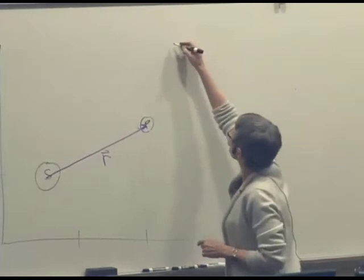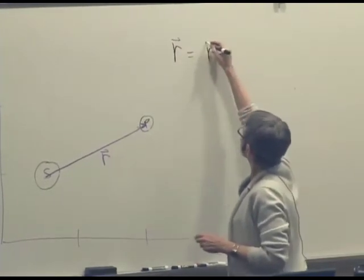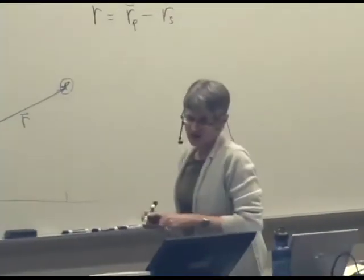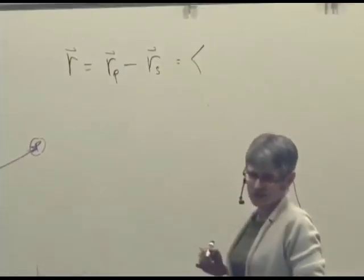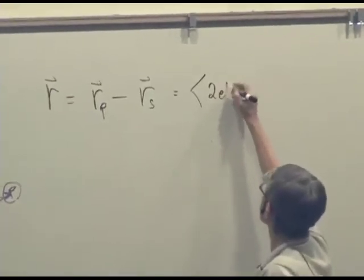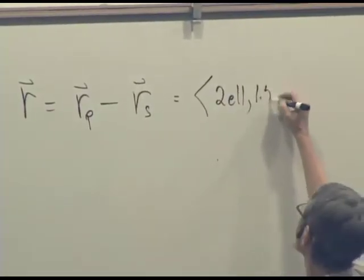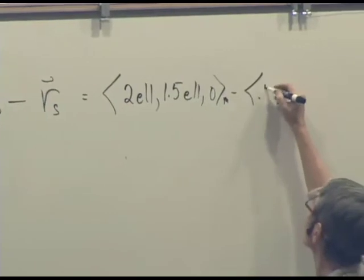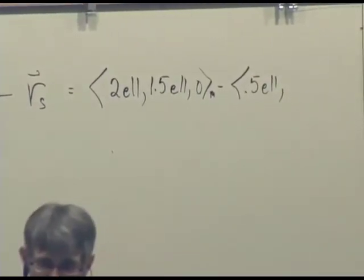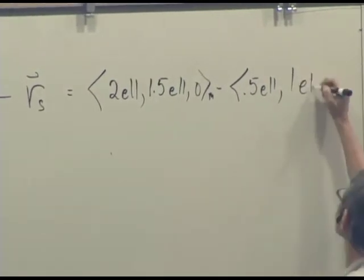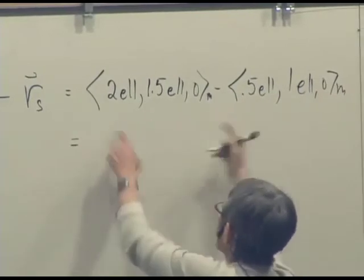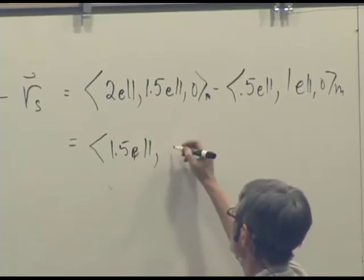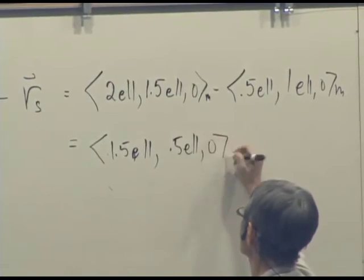Therefore, let's, so then we're going to have that it's going to be the position of the planet minus the position of the star. And so that's, what's the position of the planet? 2 times 10 to the 11th, 1.5 times 10 to the 11th, 0 meters minus 0.5 times 10 to the 11th, 1 times 10 to the 11th, 0 meters. And so we get 1.5 times 10 to the 11th, 0.5 times 10 to the 11th, 0 meters for R.